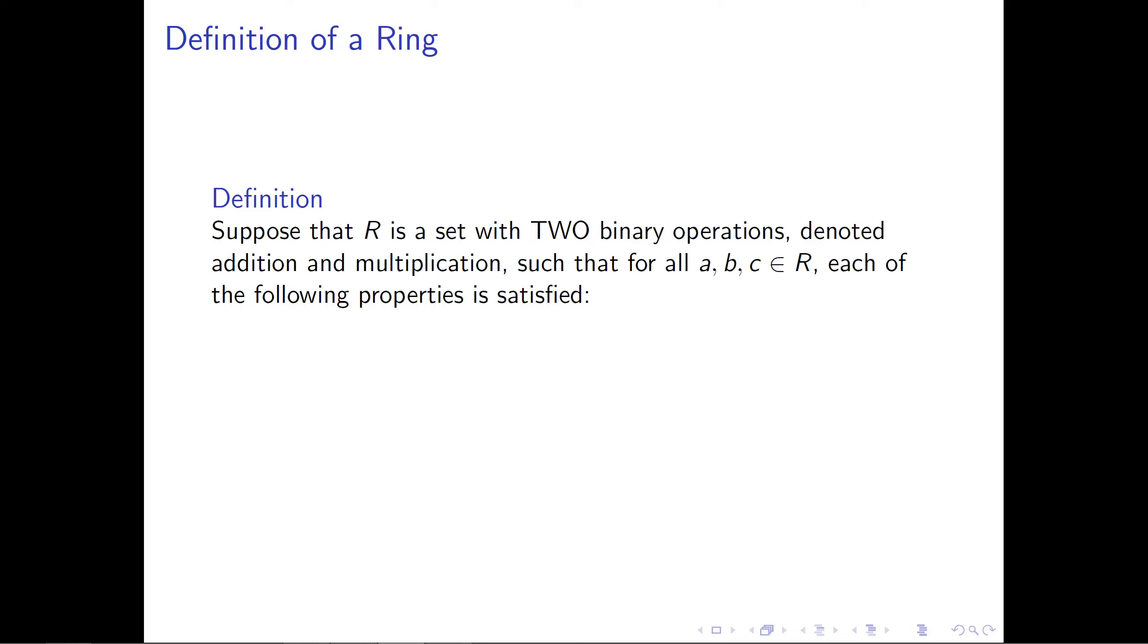Let's suppose that R is a set that comes along with two binary operations. We're going to denote those by addition and multiplication, and we wanted to satisfy some properties. So whenever we take three elements a, b, and c in the set R, we want each of the following properties to be satisfied.